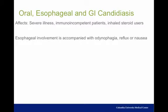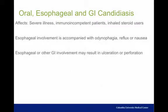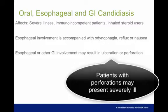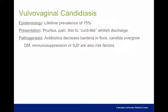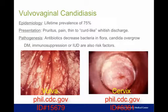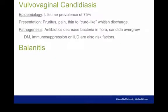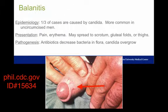Oral candidiasis is often accompanied by esophageal involvement, presenting with odynophagia, reflux, or nausea. Intestinal involvement is also possible, with severe sequelae including ulceration or perforation of the GI lumen. Vulvovaginal candidiasis is very common, accompanied by vulvar pruritus, pain, and a thin to curd-like whitish discharge; antibiotics decrease lactobacilli in the vaginal flora, which normally inhibit candidal overgrowth. Balanitis is caused by Candida in roughly one-third of cases, presenting with burning, erythema, and white patches on the glans.